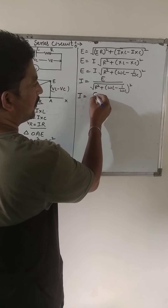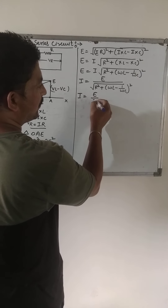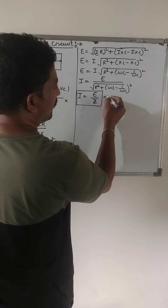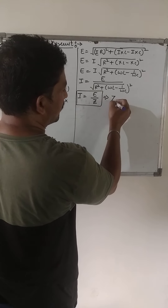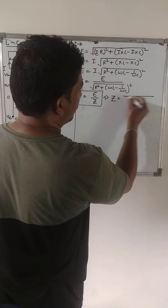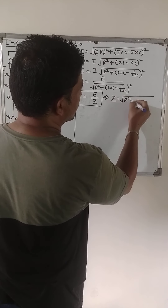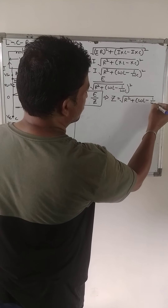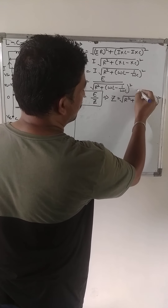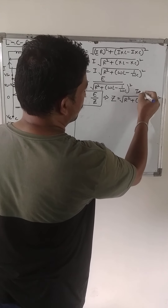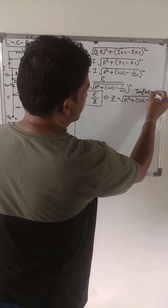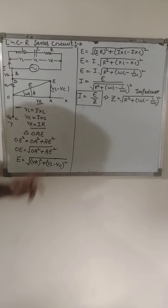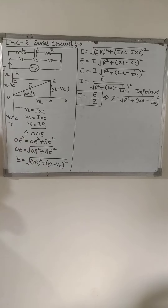So I = E/Z, where Z is the impedance. Impedance Z = √(R² + (ωL − 1/(ωC))²). This gives us the magnitude of the current. The magnitude part is now solved.